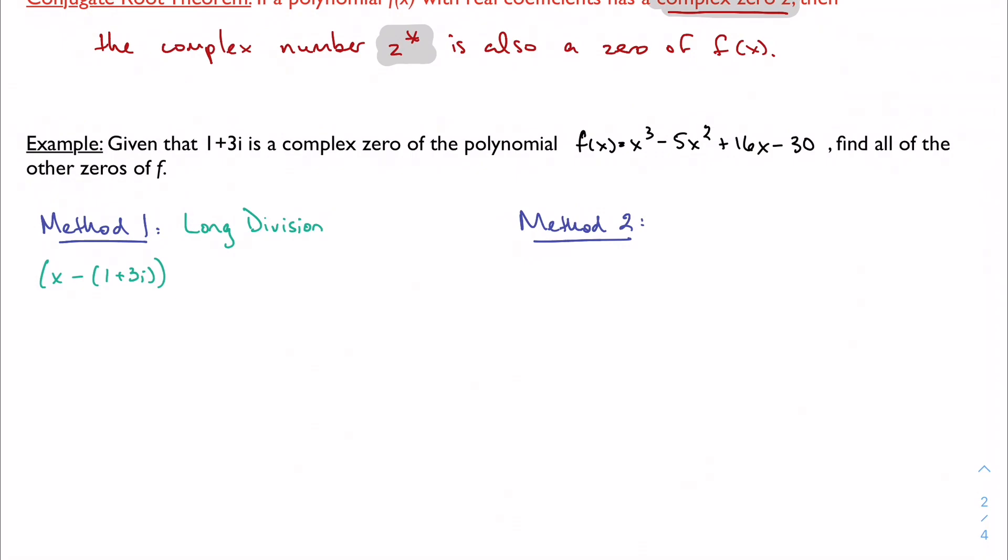I also know that x minus its conjugate (1-3i) is a factor. And I can do long division by turning this into a smaller polynomial that is a factor of f with real coefficients. So this is when things get kind of messy.